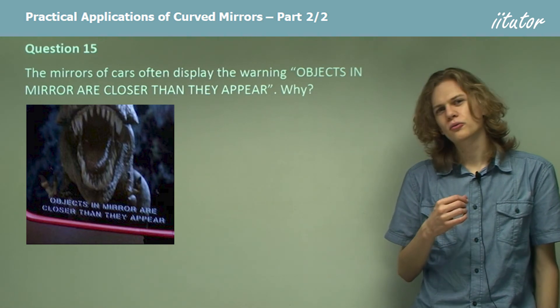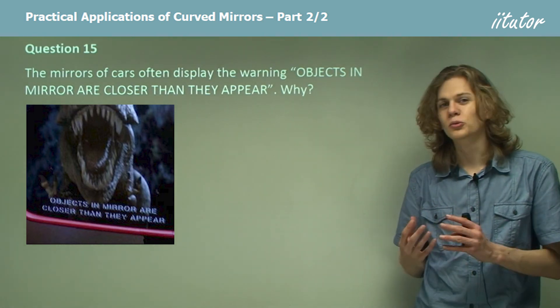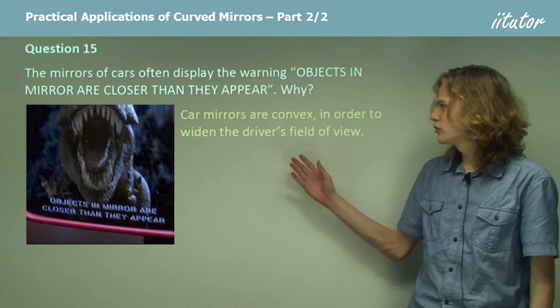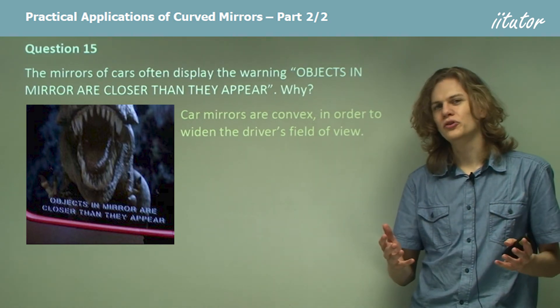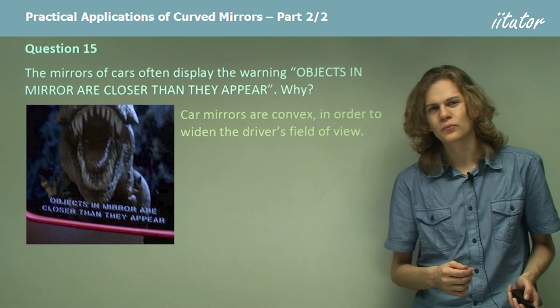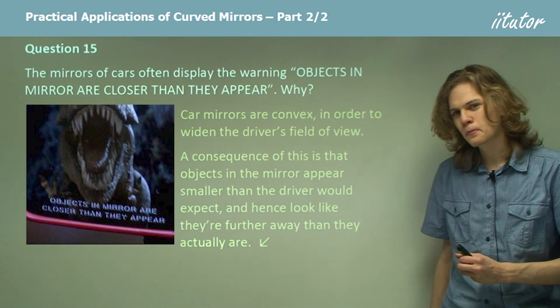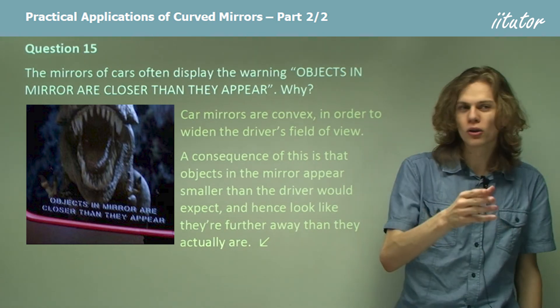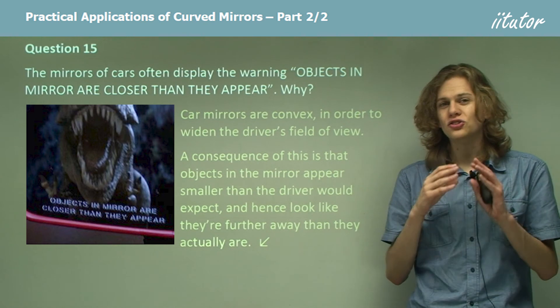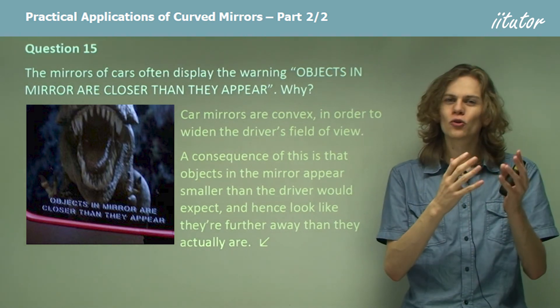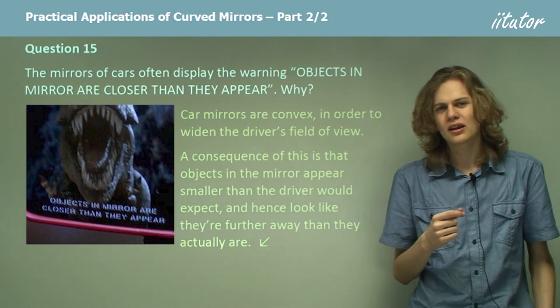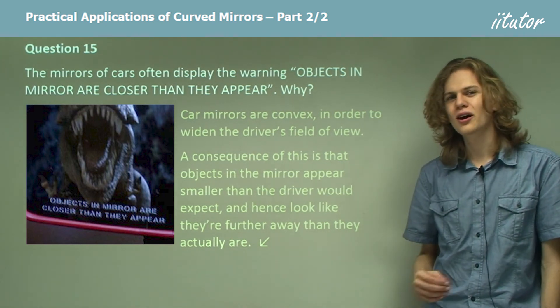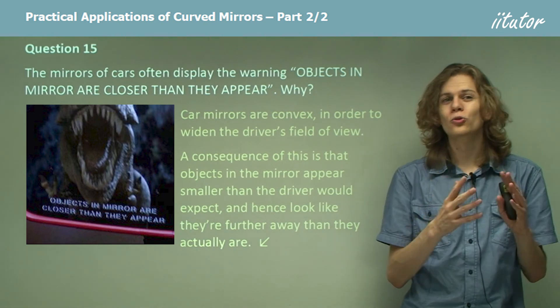In a plain mirror, the reflected objects always seem exactly the same size as they are in real life. In convex mirrors, we have something a little different happening. Convex mirrors widen the field of view of the driver. They reflect a wider area than a plain mirror. What this means is that objects in this wider area seem smaller. And our brain says if objects are smaller, they must be further away. So when we see objects in a convex mirror, our brain thinks that they are further away than they really are. And this is what makes it so hard to judge distance when looking into a convex mirror. Hence, we need to have a warning on car mirrors saying that objects in the mirror are closer than they appear.